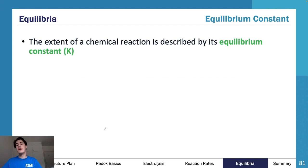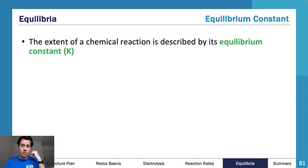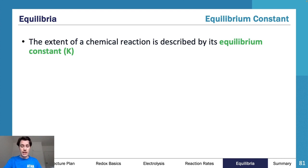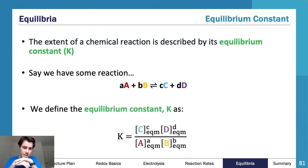Now that we have the equilibrium concentrations from our ICE table, we can use them in our equilibrium constant K. The equilibrium constant is a statistical measure of how far our equilibrium system goes toward the reactants or the products — or realistically, where it sits on the spectrum. We use a K value determined from a specific equation.